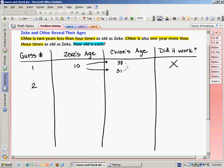So I move on to guess 2. Typically, you should have a better idea of how to guess in the second guess. But I don't really know if I need to guess a higher age for Zeke or a lower age for Zeke. So I'm really just going to randomly guess. I'm going to try higher. If Zeke is 12, according to the first clue that Chloe is 2 years less than 4 times as old as Zeke, I would do 12 times 4, which is 48, and subtract 2. That's 46.